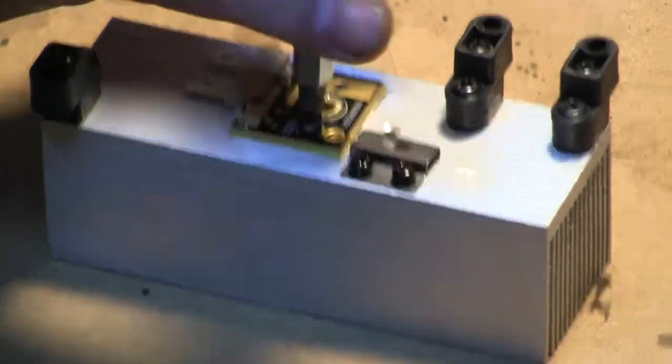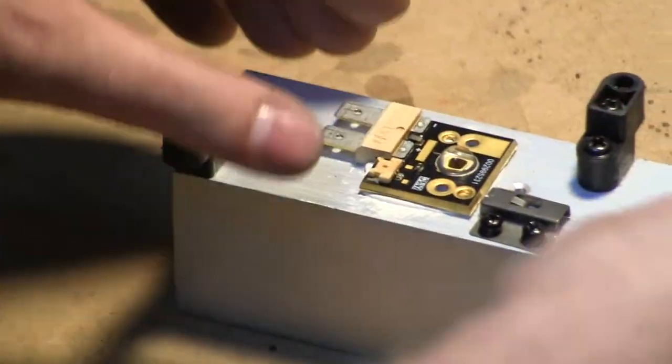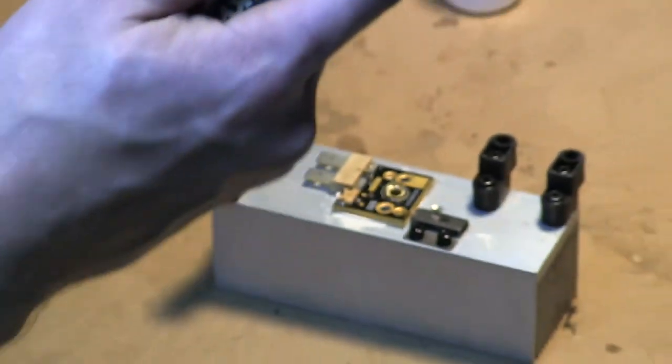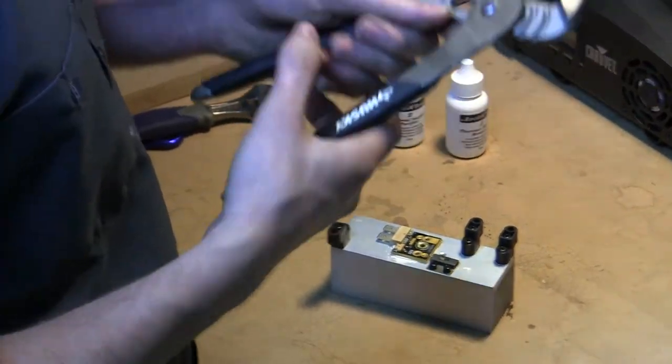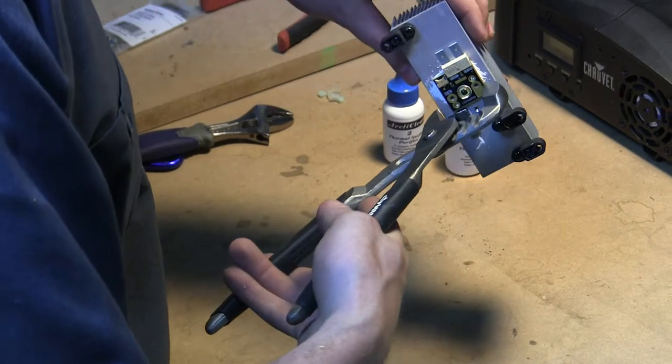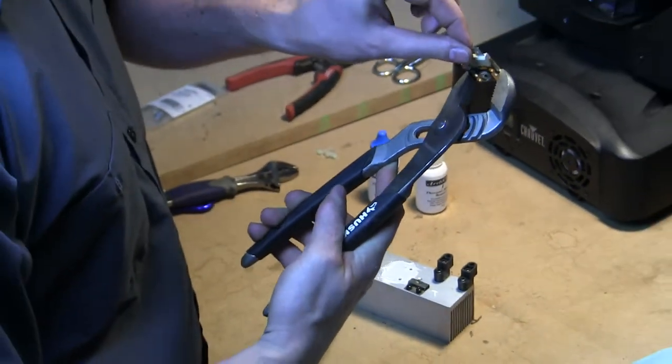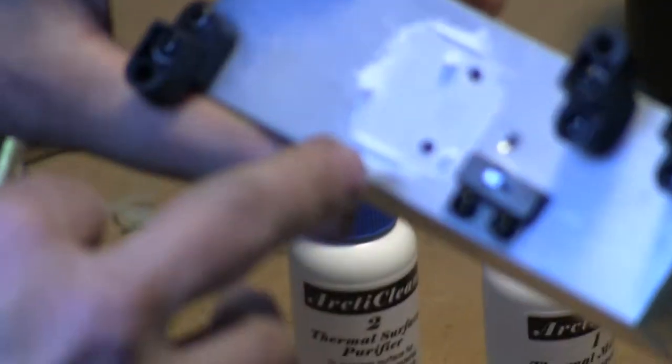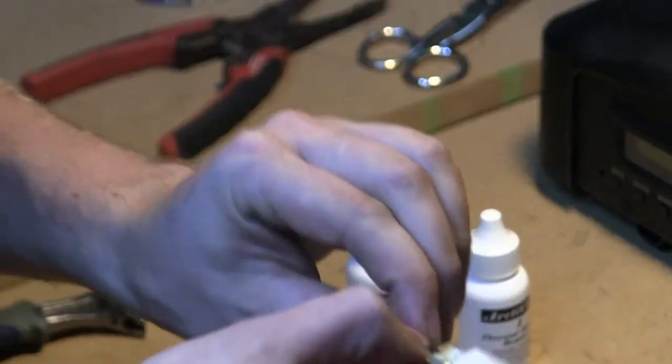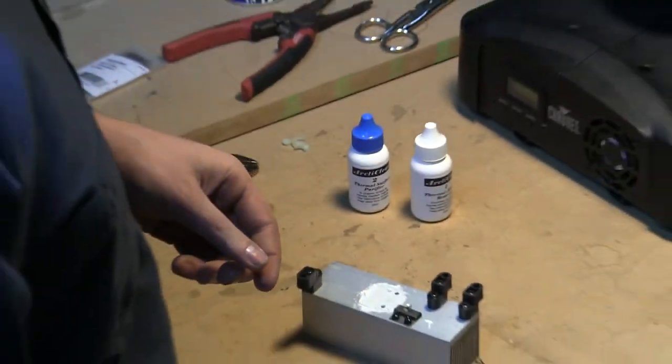Once we've removed both screws, that diode will come off fairly easy. But if you're having any problems getting it stuck or anything like that, I recommend a pair of vice grips or some other tools similar that allows you to get a parallel grip on something. You can simply just grab the diode on both sides and it'll pop right off. Again, you'll notice the bottom of it is coated in that thermal compound, as is the heat sink itself. The diode we're not going to use anymore, so you can throw it away.